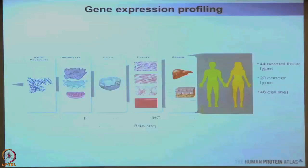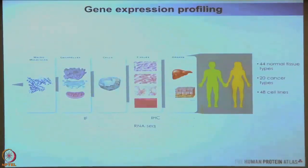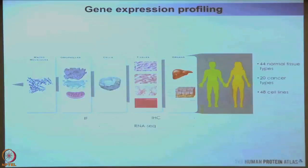What I will focus on is gene expression profiling. For gene expression profiling we use immunofluorescence for looking at cells and organelles, immunohistochemistry for looking at cells, tissues, and organs, and then we do RNA sequencing to get quantitative data for our gene expression profiles.